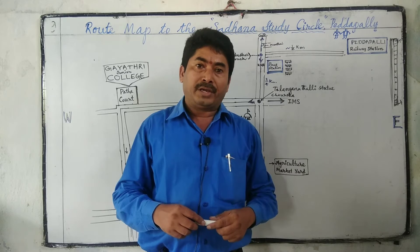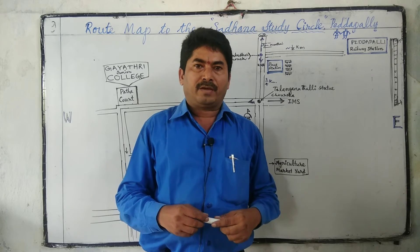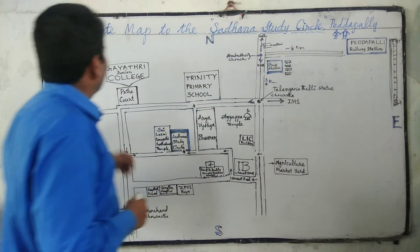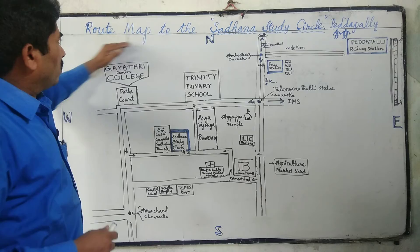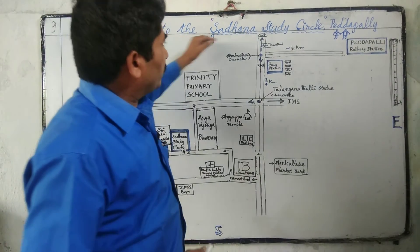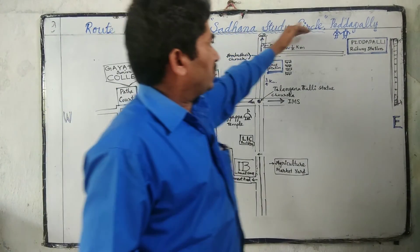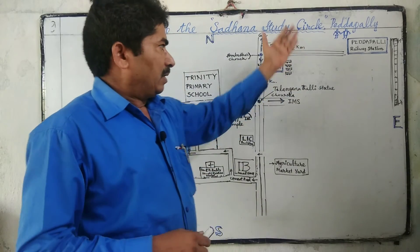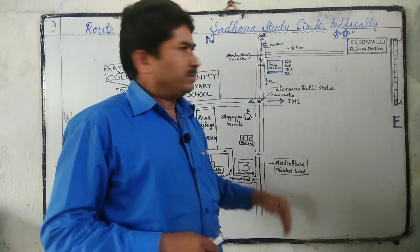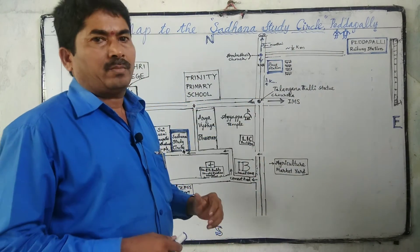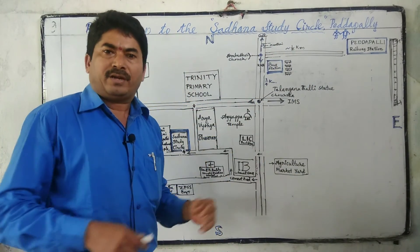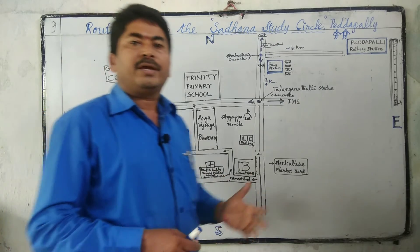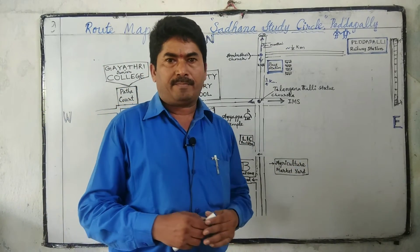Next — what is a route? The similar meaning of route is a way. Now I will show you a route map to our institute Sadhana Study Circle in Pedapalli. From the railway station, bus station, or from anywhere, you can reach it easily using this map.